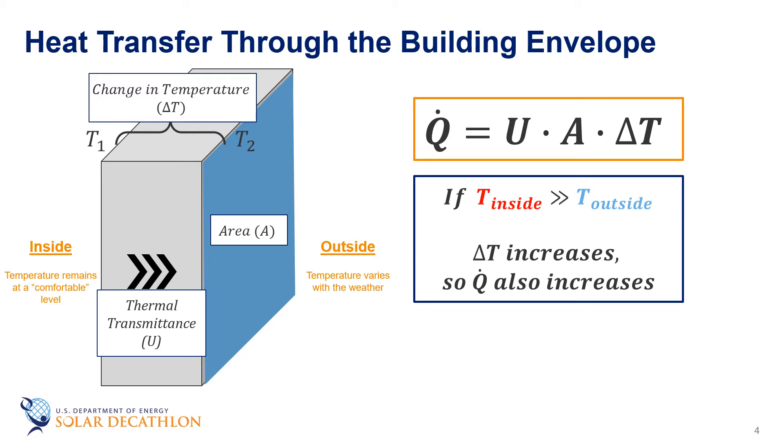Thinking about this on a bigger scale, colder climates have larger delta T's compared to mild climates. In these colder climates or in the winter when you generally have a larger delta T, a common strategy is to reduce the inside temperature in order to reduce the delta T from inside to outside. This is often called a temperature setback.